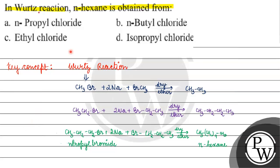So we asked how to form N-hexane. The correct answer will be N-propyl chloride will form N-hexane, right? What has it written here? Bromide, right?